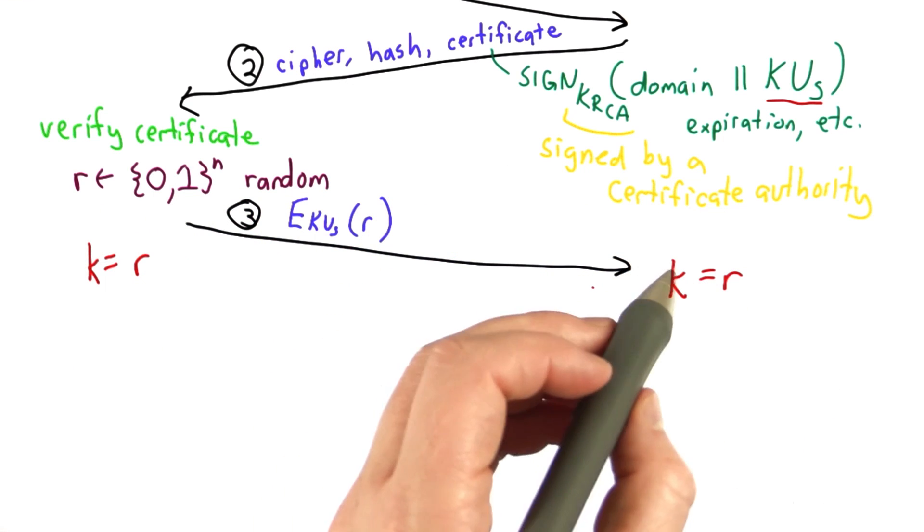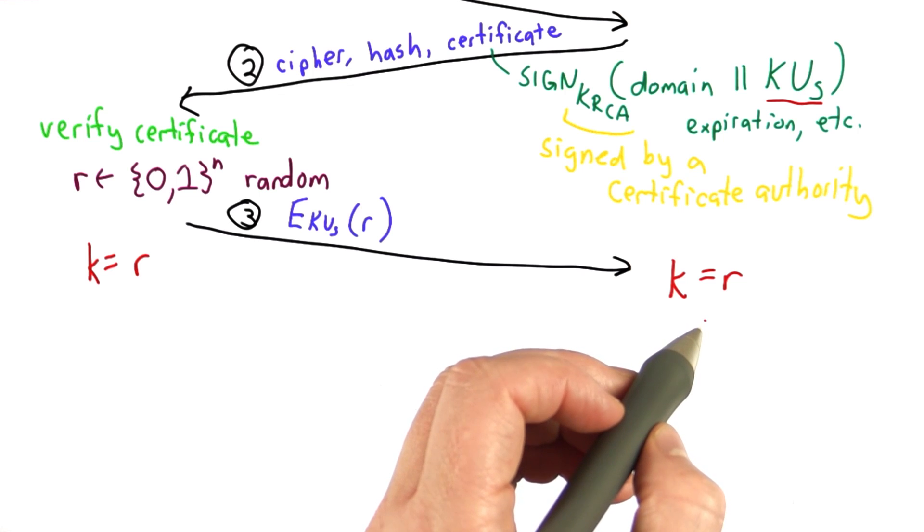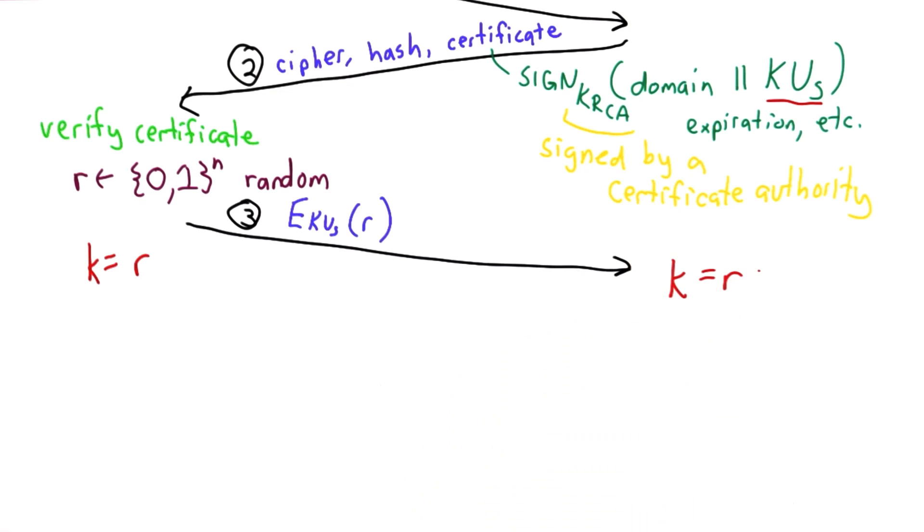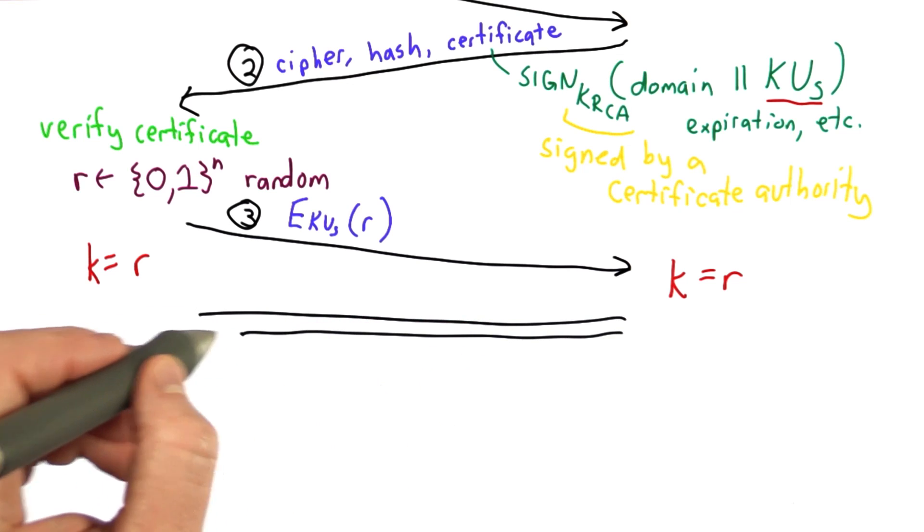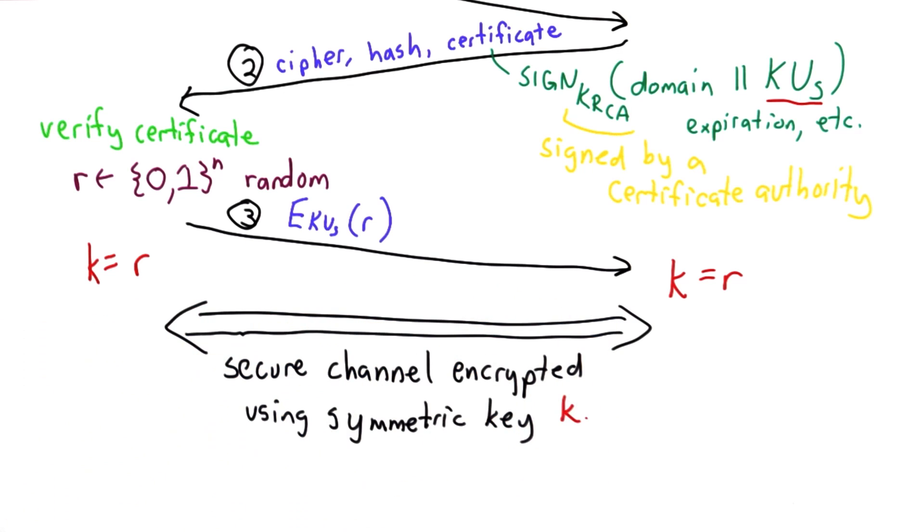Now, once the server receives this message, it can decrypt it using its private key. We'll use the value of r as a session key, and after this, both the client and the server have the shared session key and can communicate. Now we have a secure channel between the client and the server encrypted with the symmetric key, K.